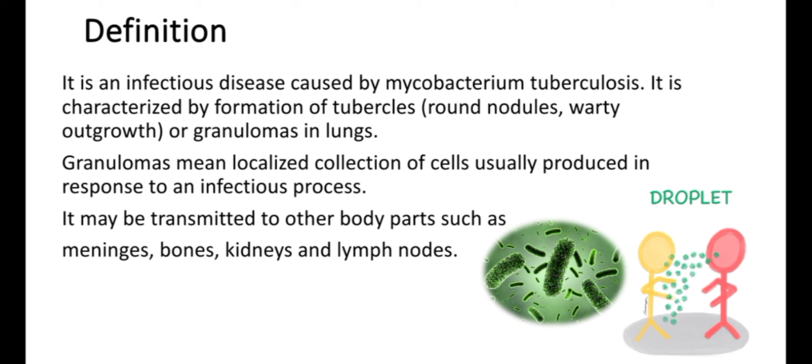Mycobacterium tuberculosis is the causative agent. It is resistant to several antibiotics and can survive in many extreme conditions. Pulmonary tuberculosis is characterized by the formation of tubercles — round nodules or granulomas in the lungs. Granulomas mean a localized collection of cells, usually produced in response to an infectious process. It may be transmitted to other body parts such as the meninges, bones, kidneys, and lymph nodes.